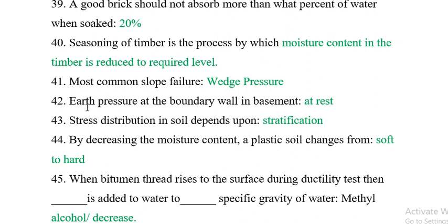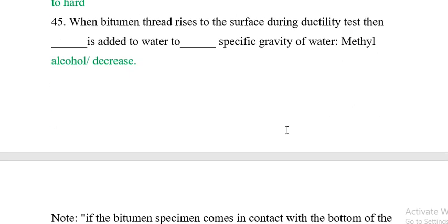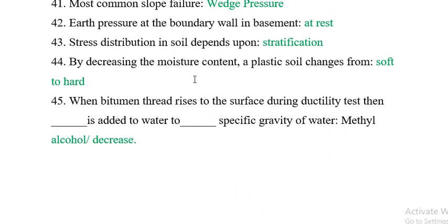Question 42: The earth pressure at a boundary wall in a basement is at rest. Question 43: The stress distribution in soil depends upon stratification. Question 44: By decreasing moisture content, a plastic soil changes from soft to hard. Question 45: When a bitumen thread rises to the surface during the ductility test, methyl alcohol is added to the water to decrease the specific gravity of the water.